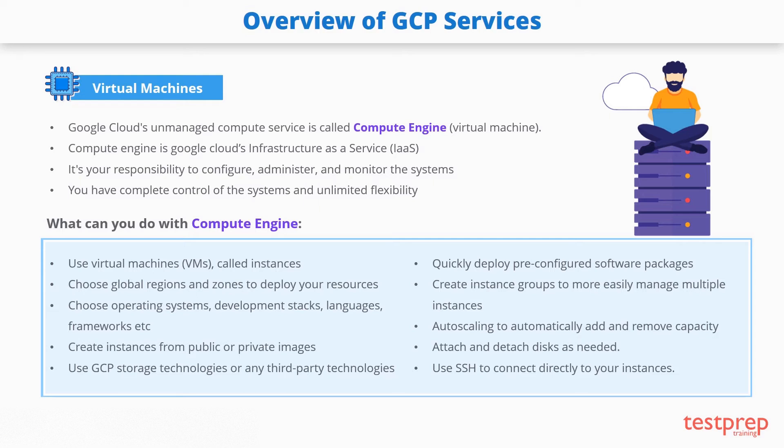You can create instances from public or private images, and use storage technologies provided by Google Cloud or any third-party technology. You can use Google Cloud Marketplace to quickly deploy pre-configured software packages — for example, deploying a LAMP or MEAN stack with just a few clicks. You can create instance groups for easy management of multiple instances, use auto scaling to automatically add and remove capacity, attach and detach disks as needed, and use SSH to connect directly to your instances.